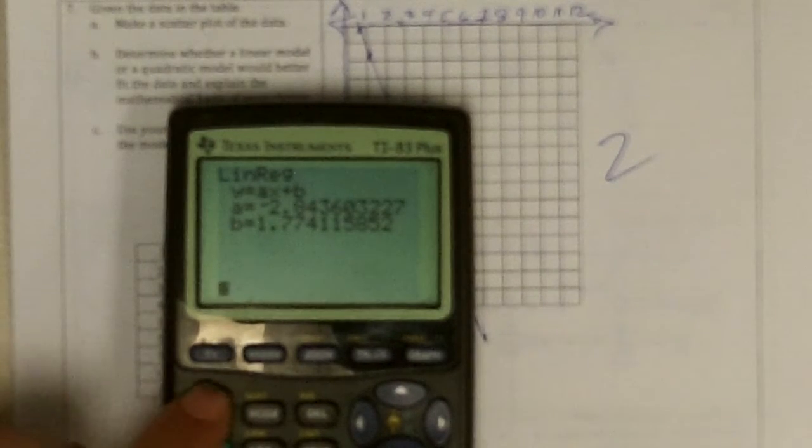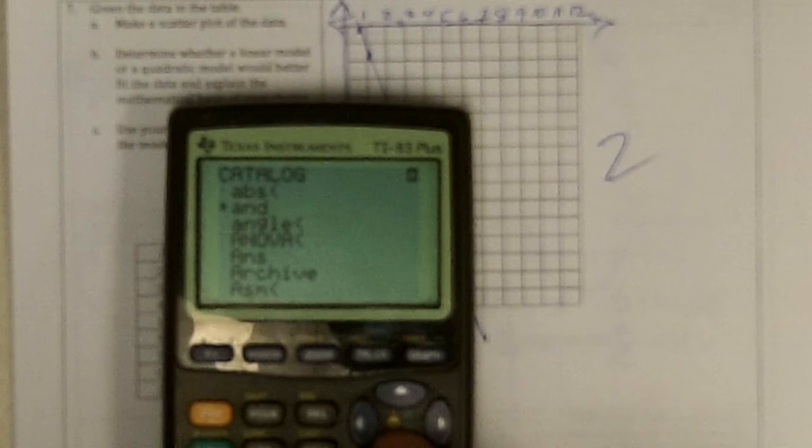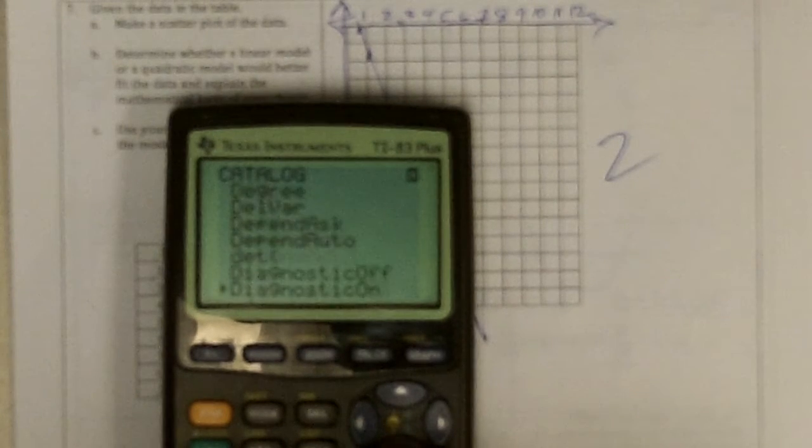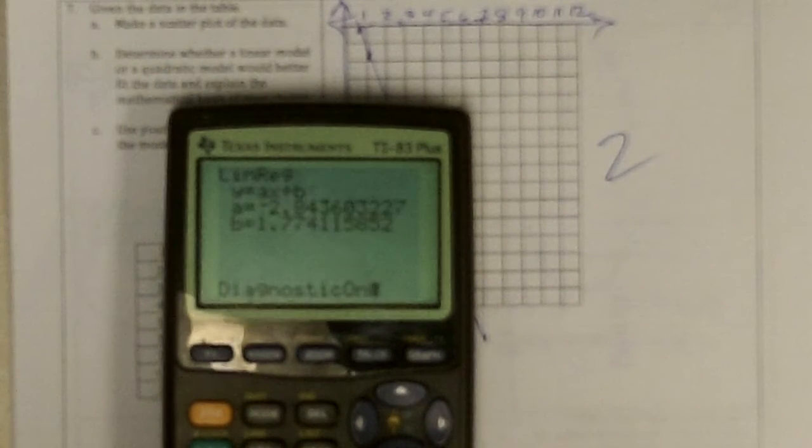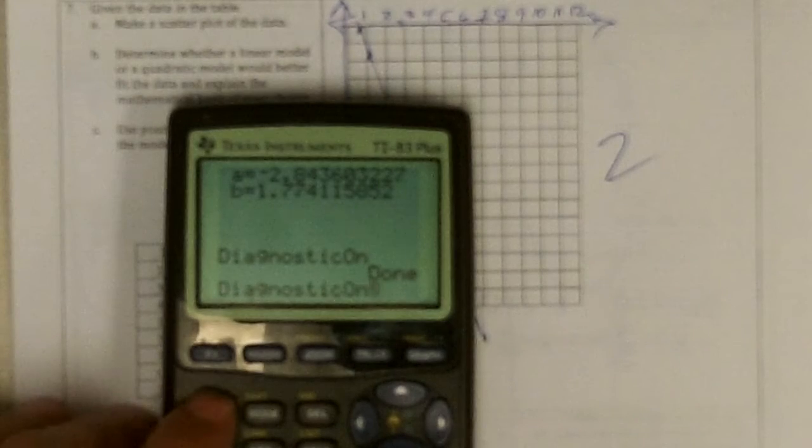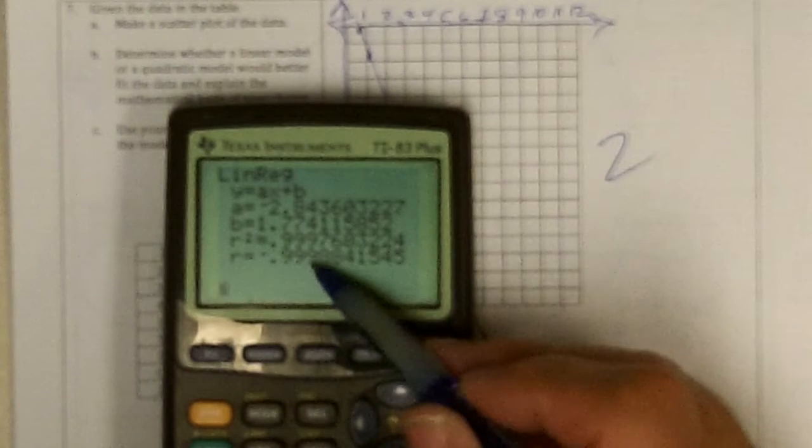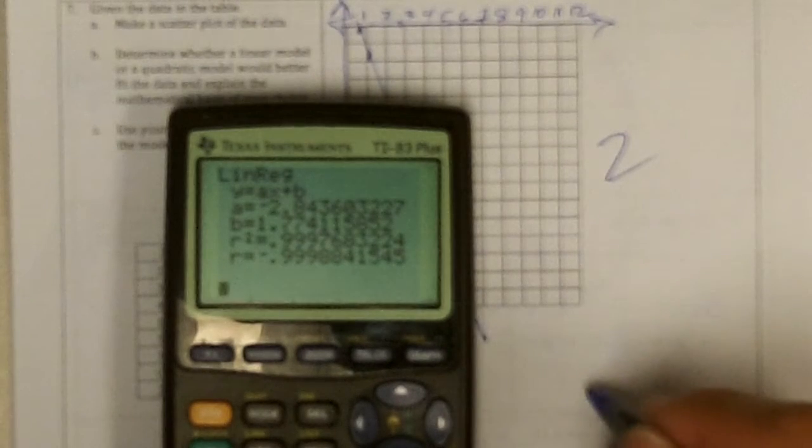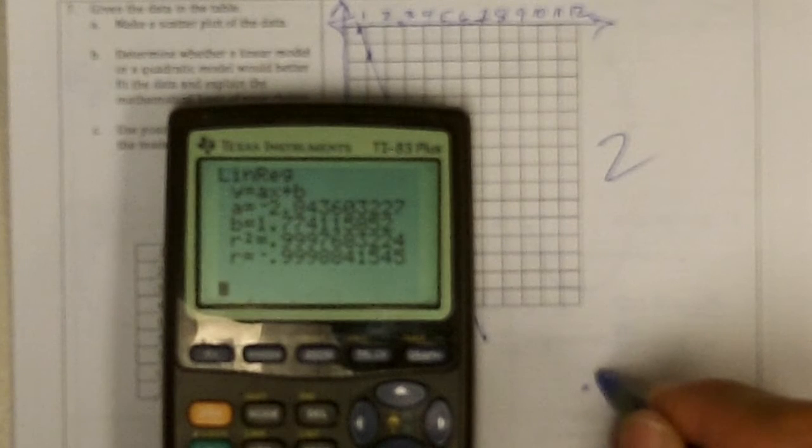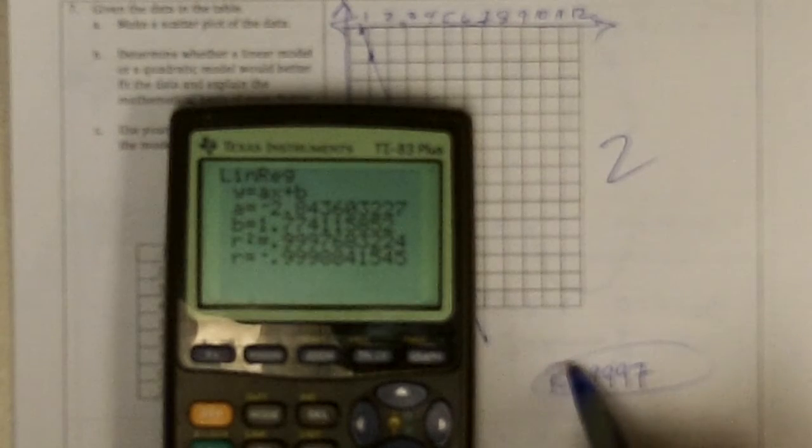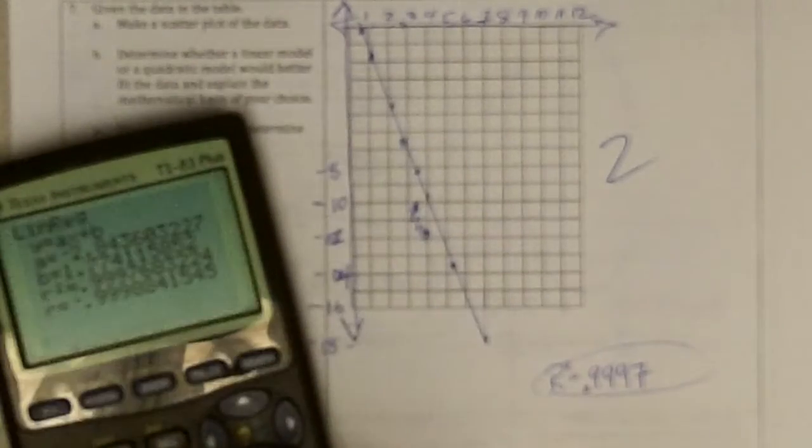Put that in the Y bars number 1, and I've got my diagnostics off here. So, I'm going to turn them on by going to catalog and go down to the Ds and find diagnostics on, press enter, press enter. Then I'm going to go back and do that last one again. And it says the R value is 0.9998. 9, 9, 9, 7. That's the R squared.